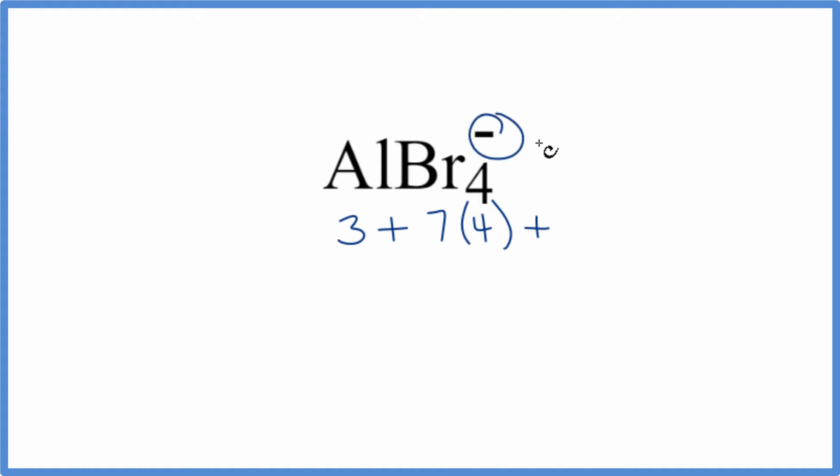And this negative, that means we have an extra negative charge and extra electrons. So we add 1 there, we end up with 28 plus 3 plus 1, 32 total valence electrons for AlBr4-.